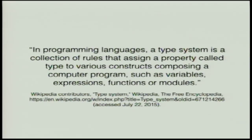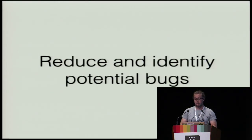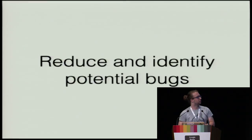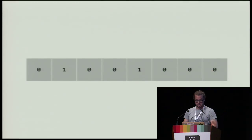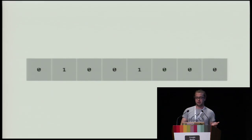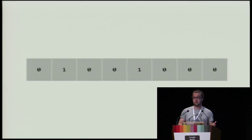Type systems have lots of purposes. The first one is that we have type systems in place to help us reduce and identify potential bugs in our programs. Also, it's going to give meaning to a sequence of bits. If I give you 8 bits, we have no idea what it is. It could be 72 if it's an integer, the letter H if it's an ASCII character, or a true Boolean value in C because it doesn't equal zero.